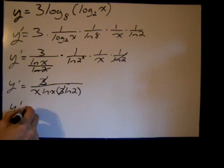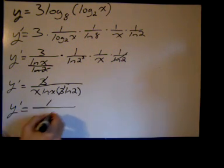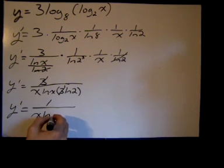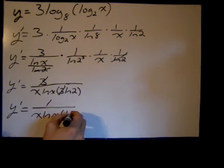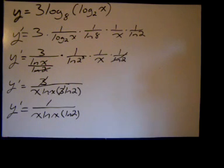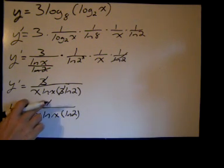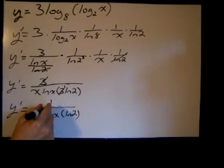So look how that derivative really cleaned up there. We have 1 over x ln of x times the natural log of 2. And that's it. I'm going to make that one a little better. I really like that problem.